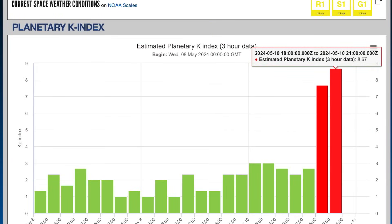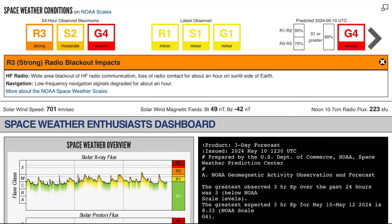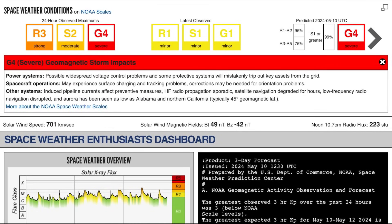Having a look right now at the KP index as we are KP 9 just over the last hour, and that most likely will level out at about 9 for the next 24 hours. Current space weather conditions are three strong radio blackout impacts expected, as well as solar radiation storm impacts, of course, with this coronal mass ejection now hitting us. G4 severe geomagnetic storm impacts are evident and will continue over the next 24 to 36 hours.